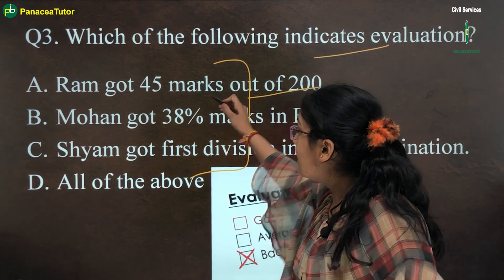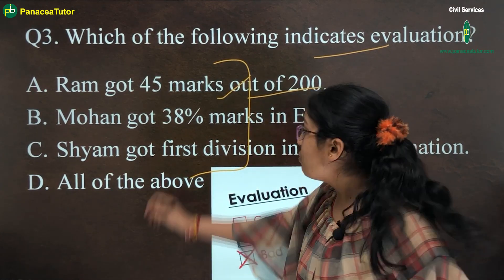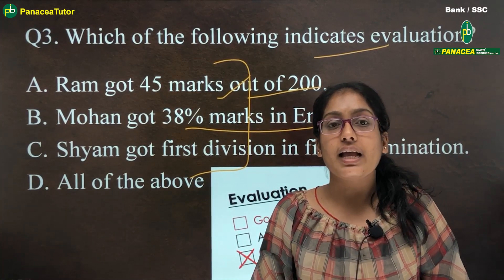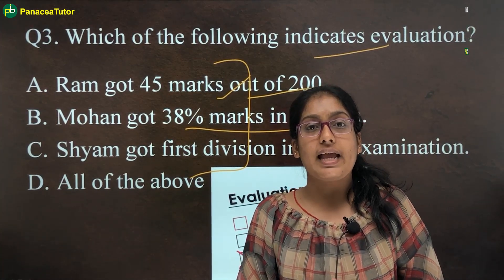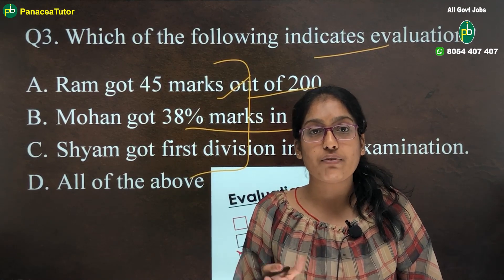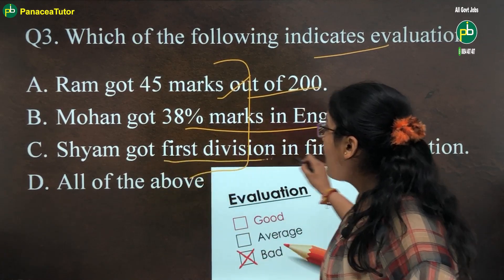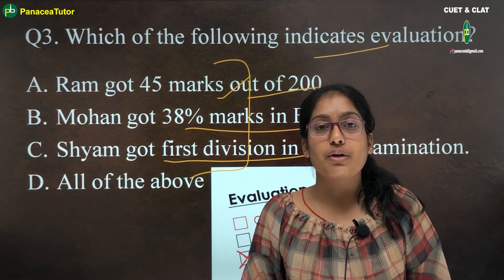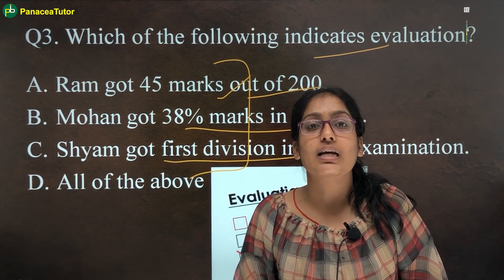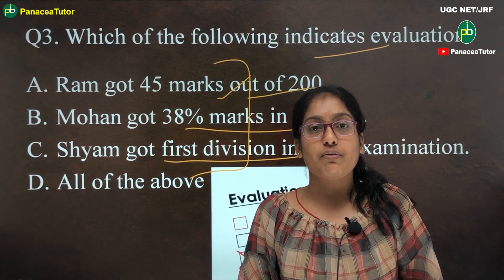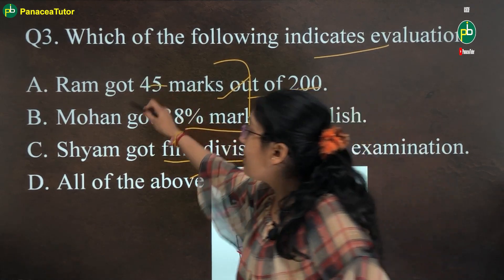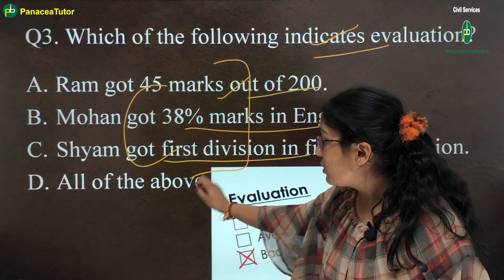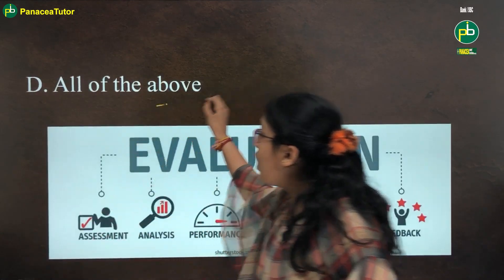The next option is: Mohan got 38 percent marks in English — this also evaluates his result. Then: Sham got first division in final examination — Sham got first position in his final exam, so this also indicates evaluation. All three statements indicate the concept of evaluation, so the answer is option D, that is all of the above.